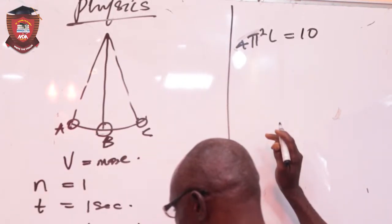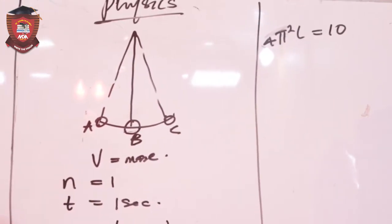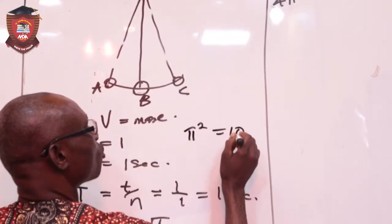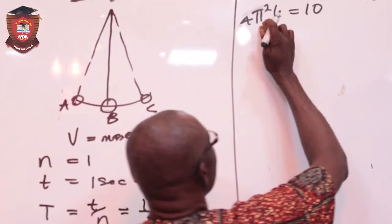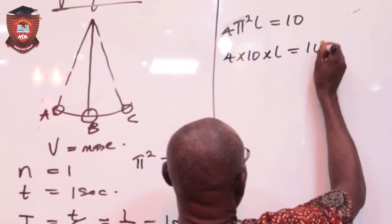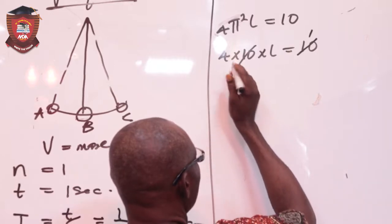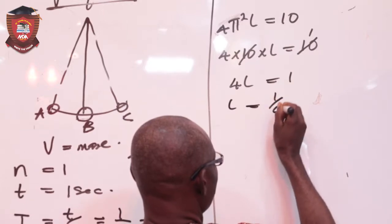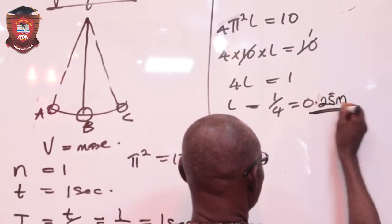Now, I am looking for the value of pi. This pi squared has a value in physics. Anywhere you see pi squared, it is approximately 10. So I can replace this by 10. So this is 4 times 10 times L is equivalent to this. The two sides now, this is 1. This time this will give me 4L equals 1. L now will be 1 over 4, which is 0.25 meters. That's the length.